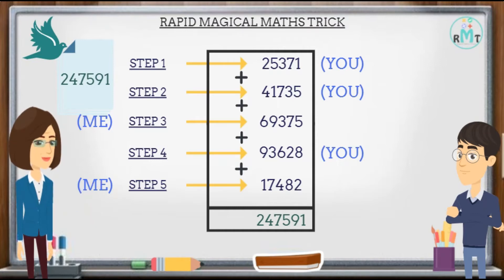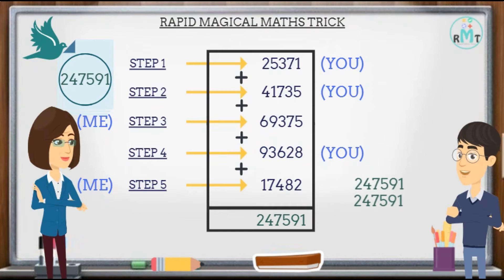Now we will add all the numbers, so the sum is 247591. Let's see the number in this paper and match your sum of numbers.